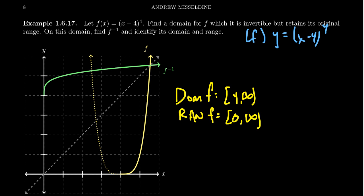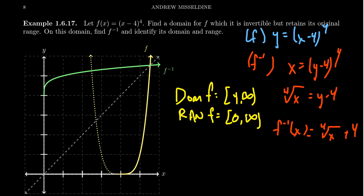And so when we switch to the inverse function, f inverse here, we're going to get x equals y minus 4 to the 4th. Take the 4th root of both sides. We get the 4th root of x equals y minus 4. Add 4 to both sides. We see that f inverse of x is equal to the 4th root of x plus 4.